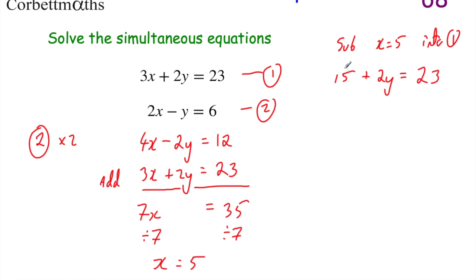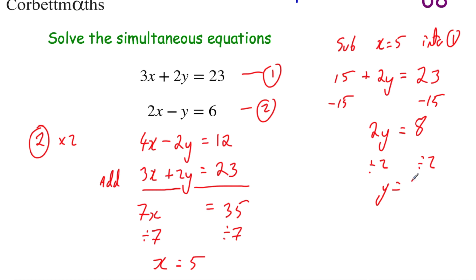We want to get y on its own, so let's get rid of the 15 by taking away 15 from both sides. 15 minus 15 is 0, leaving 2y on the left. On the right, 23 minus 15 equals 8. So 2y equals 8. Divide both sides by 2 and we get y equals 4. So we've got x equals 5 and y equals 4 — that's our answer.